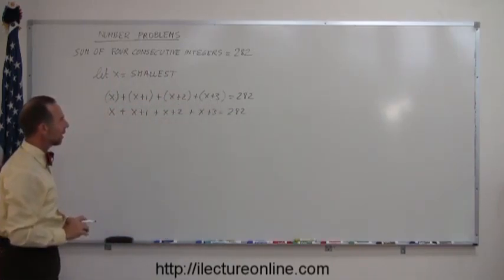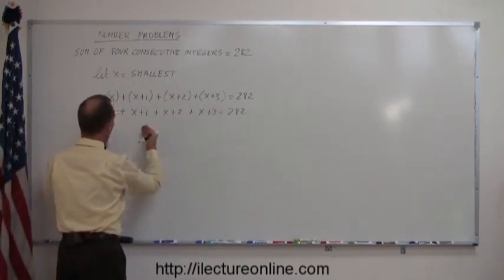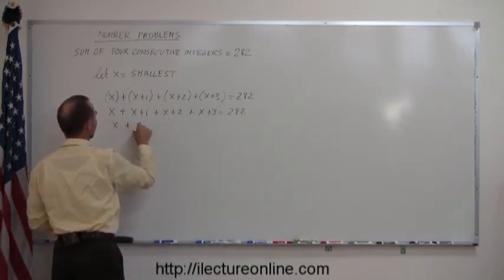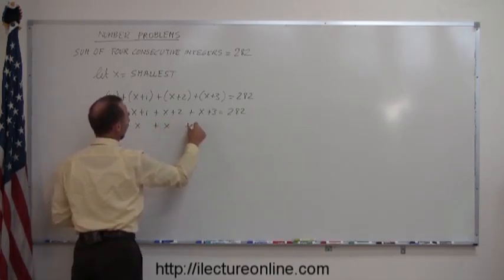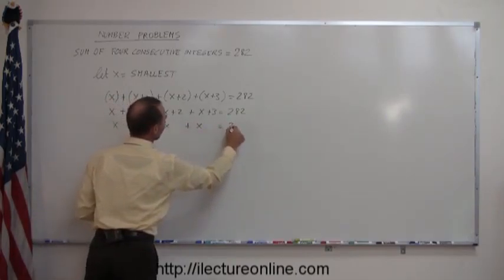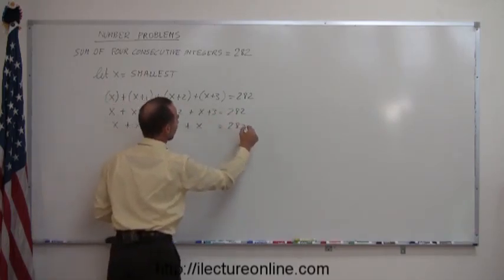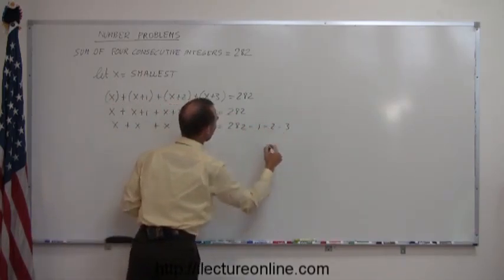Okay, the next thing, I want to move all the x's to the left side, which they're already there, and then move all the numbers to the right side. So that gives me x plus x plus x plus x, they're still there, equals 282. And I move the numbers, the 1, the 2, the 3, to the other side. This becomes minus 1, minus 2, minus 3.